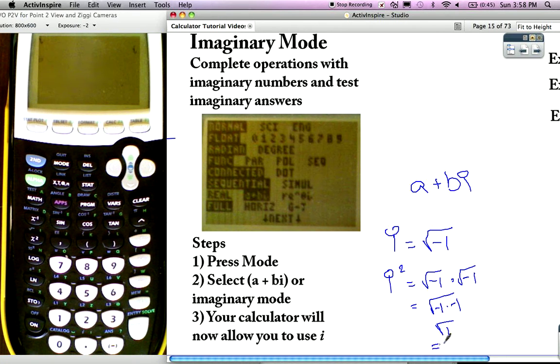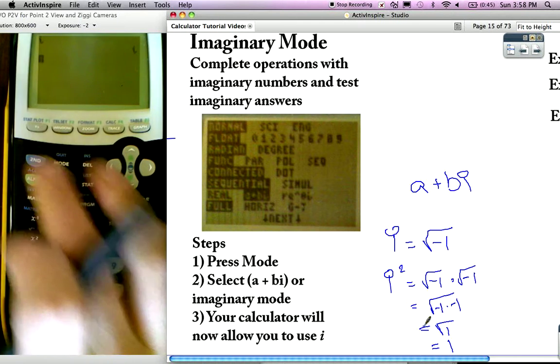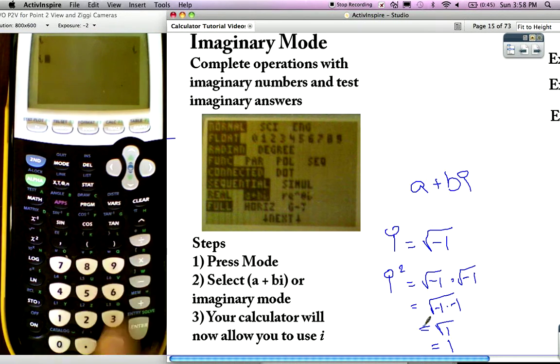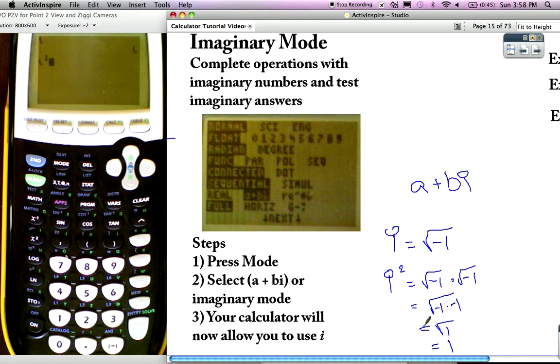Which is one. Now let's watch the calculator do that for us, because i squared is negative one.